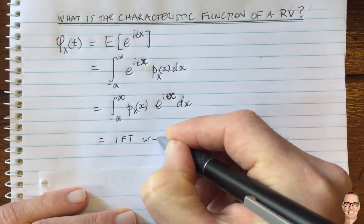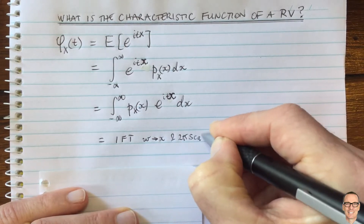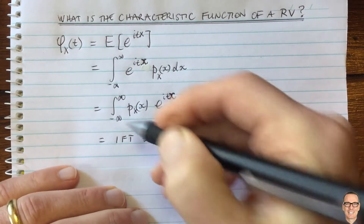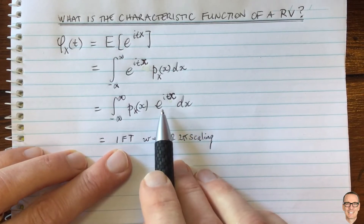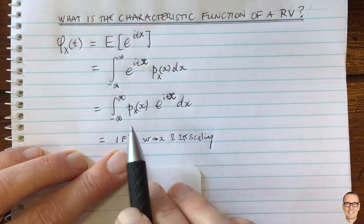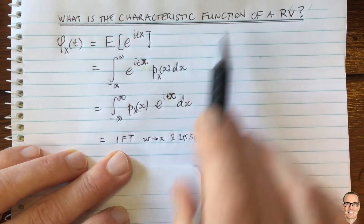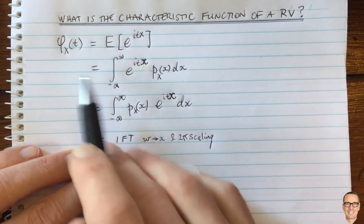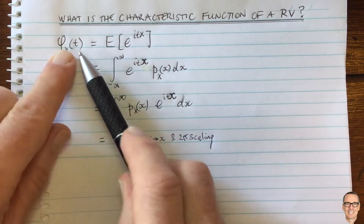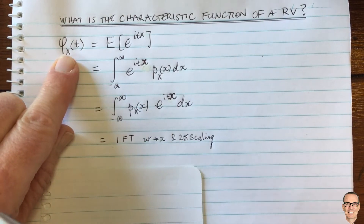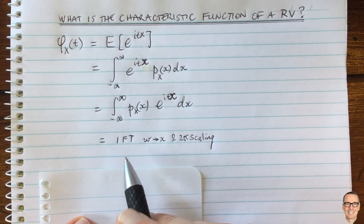So this is the inverse Fourier transform — I'll indicate this with omega replaced by x and the 2π scaling. It's important that we get that exactly right, but in fact it's just a scaling. So this is a function of the form of the inverse Fourier transform of the PDF. The characteristic function is therefore the inverse Fourier transform of the PDF of the random variable, and you can go backwards and forwards between the PDF and the characteristic function using the Fourier transform — it's an invertible function.